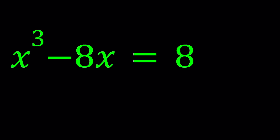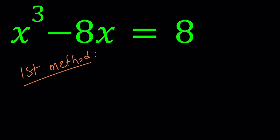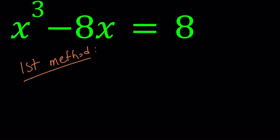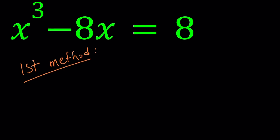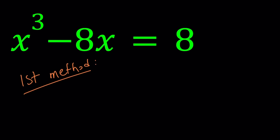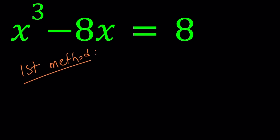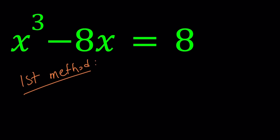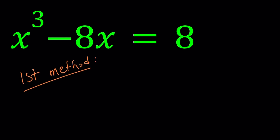The first method is going to be using the cubic formula. Whether you call it Ferrari's method, Cardano's method, Tartaglia's method — Ferraro, Ferrari, Lamborghini — I don't know what the method is called, but somebody found it, somebody discovered it, and someone else took it from them.